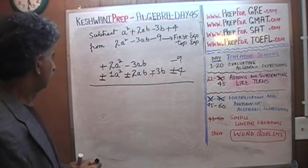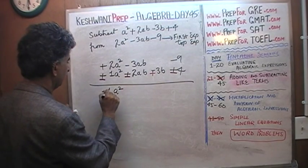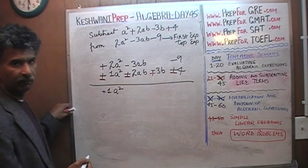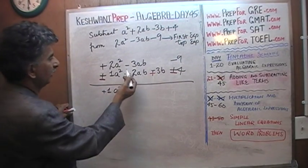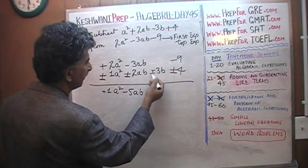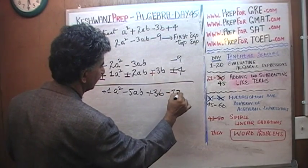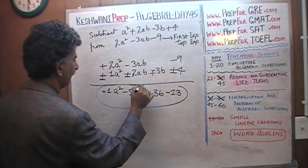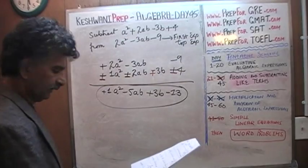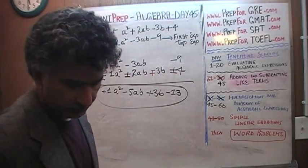Once we have changed the signs, it is just a matter of adding. A positive 2 and a negative 1 gives us positive 1a squared. A negative 3 and a negative 2 gives us negative 5ab. The negative 3b became positive 3b. And negative 9 and negative 4 gives us negative 13. So the answer is a squared minus 5ab plus 3b minus 13.